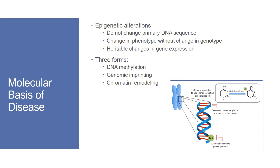When talking about the molecular basis of disease, we also need to know about epigenetic alterations, which can cause a change in phenotype without actually changing the genotype — there are no changes to the primary DNA sequence. These can become heritable changes in gene expression, and there are three forms of epigenetic alterations: DNA methylation, genomic imprinting, and chromatin remodeling.